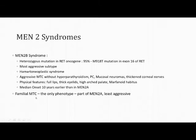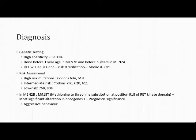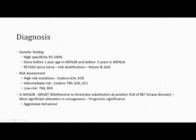On physical examination, children with MEN 2b have full lips, thick eyelids, high arched palate, and Marfanoid habitus. The median onset is about 10 years earlier than MEN 2a. Familial medullary carcinoma of the thyroid can occur as an isolated phenotype within MEN 2a and is the least aggressive form. Diagnosis is by genetic testing with 95-100% specificity, done before one year of age in MEN 2b and before five years in MEN 2a. Risk stratification is based on codon involvement: codon 918 is highest risk, codons 634 and 618 are high risk, with intermediate and low risk classifications also defined.